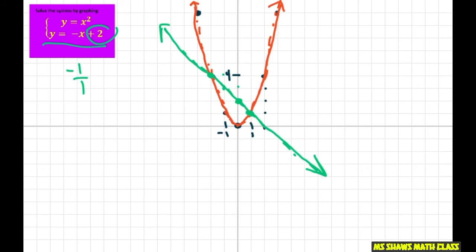And so the solutions would be, this is negative two. So this one right here, it's negative two comma four. And this one right here, this is at one. So this is one comma one. This point here is one. So those are your two solutions.